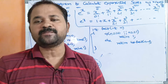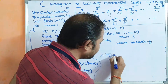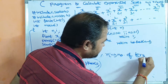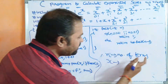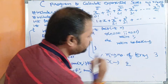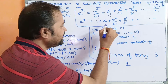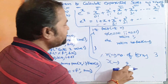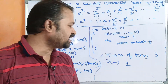In this program, our target input is n value — n stands for number of terms — and x value. Suppose if the number of terms is 3 and x value is 2, then number of terms being 3 means this is the first term, this is the second term, and this is the third term. x value is 2, so in place of x we substitute the value 2.